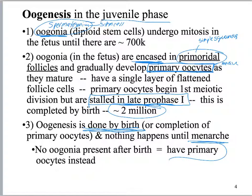Nothing is then going to happen until menarche. A reminder: menarche is when menses begin in the tween or teen girl. After birth, you have no oogonia left — you have only primary oocytes, and those are going to hang out and do nothing until menarche starts.